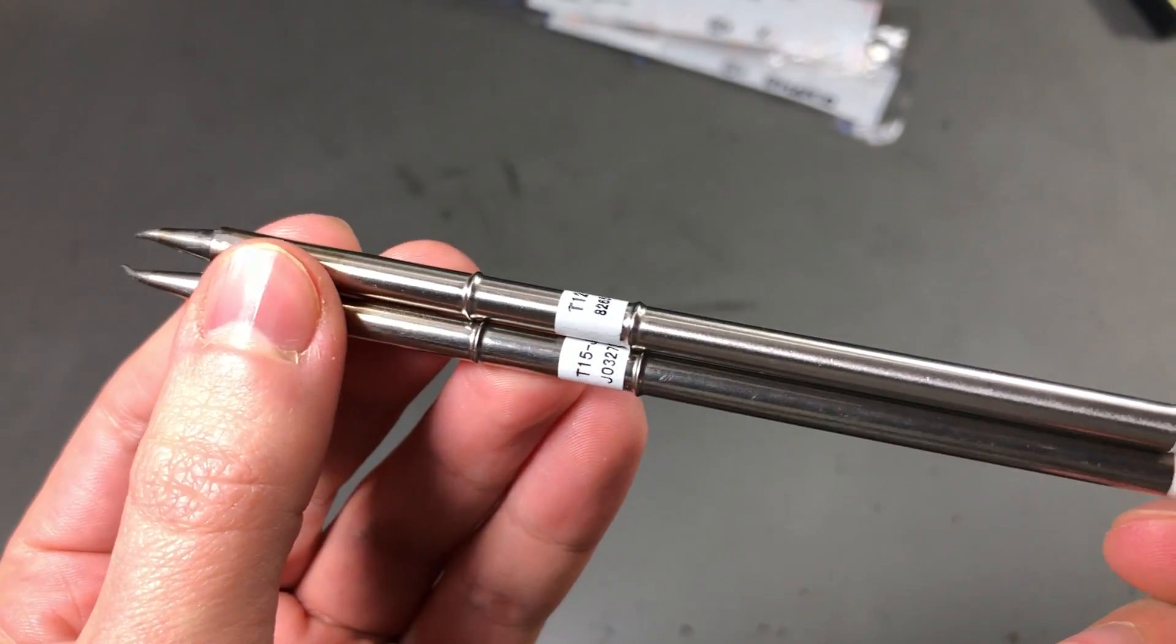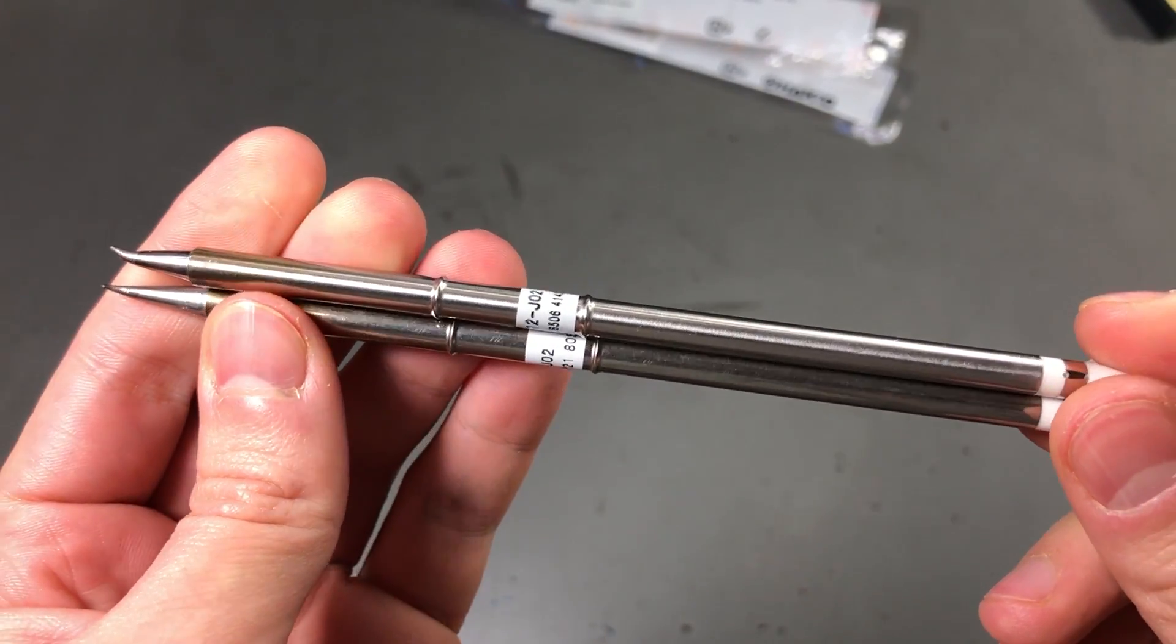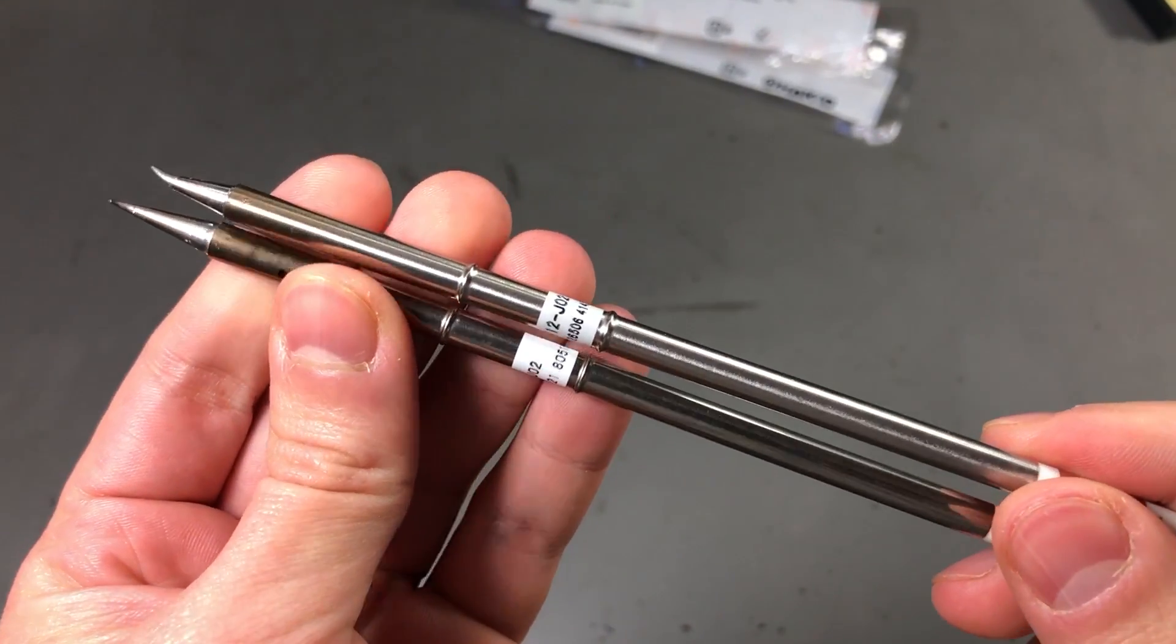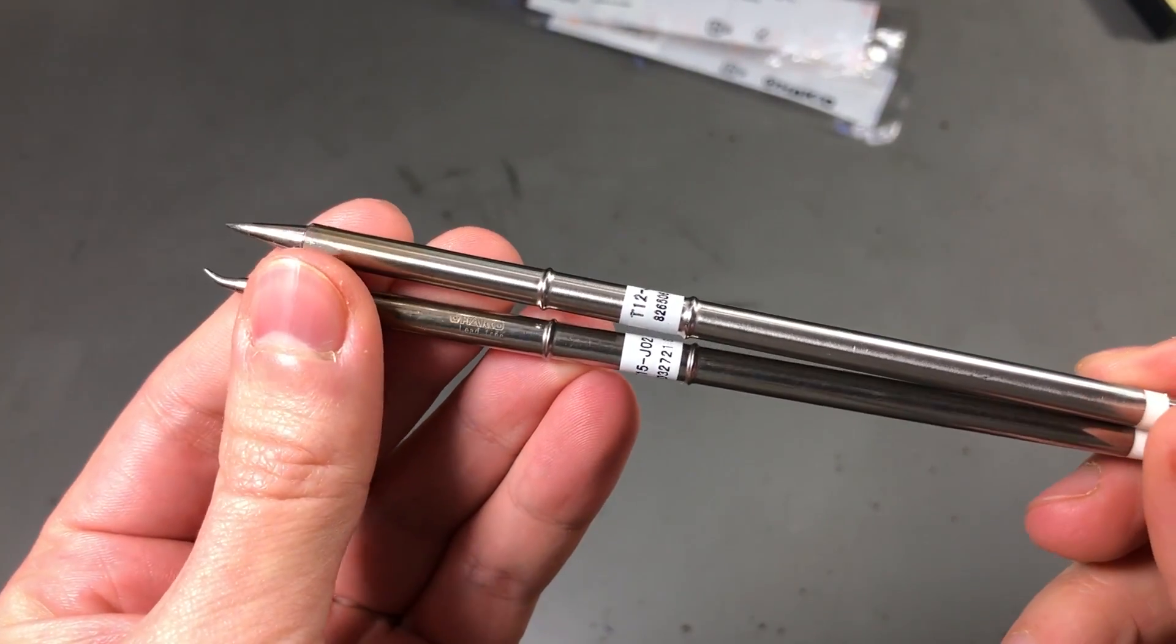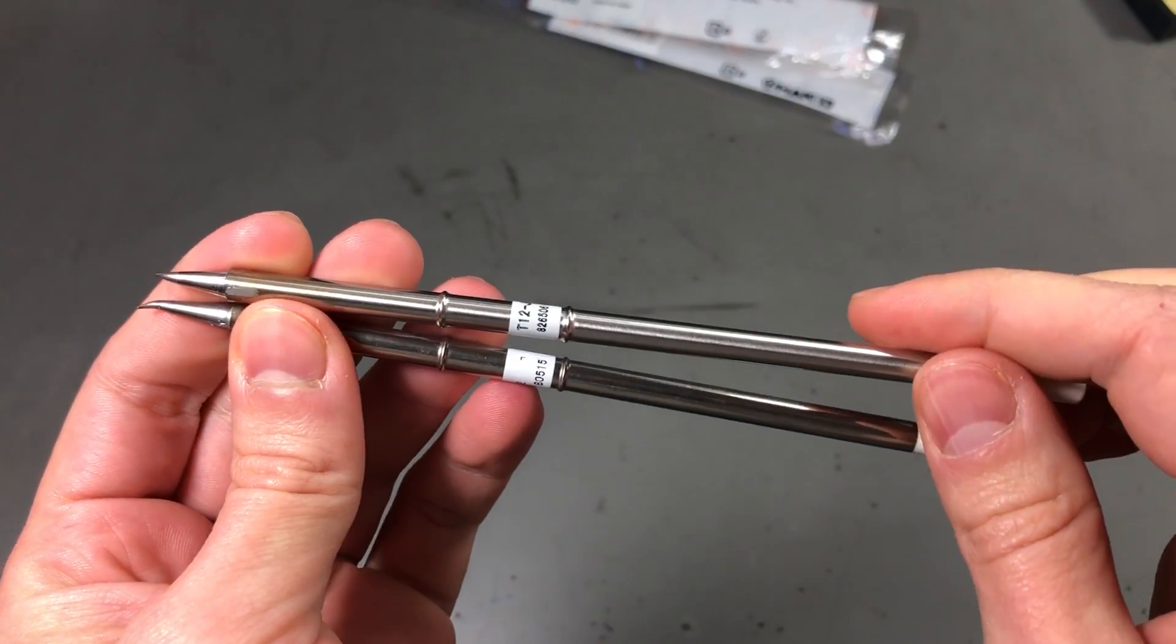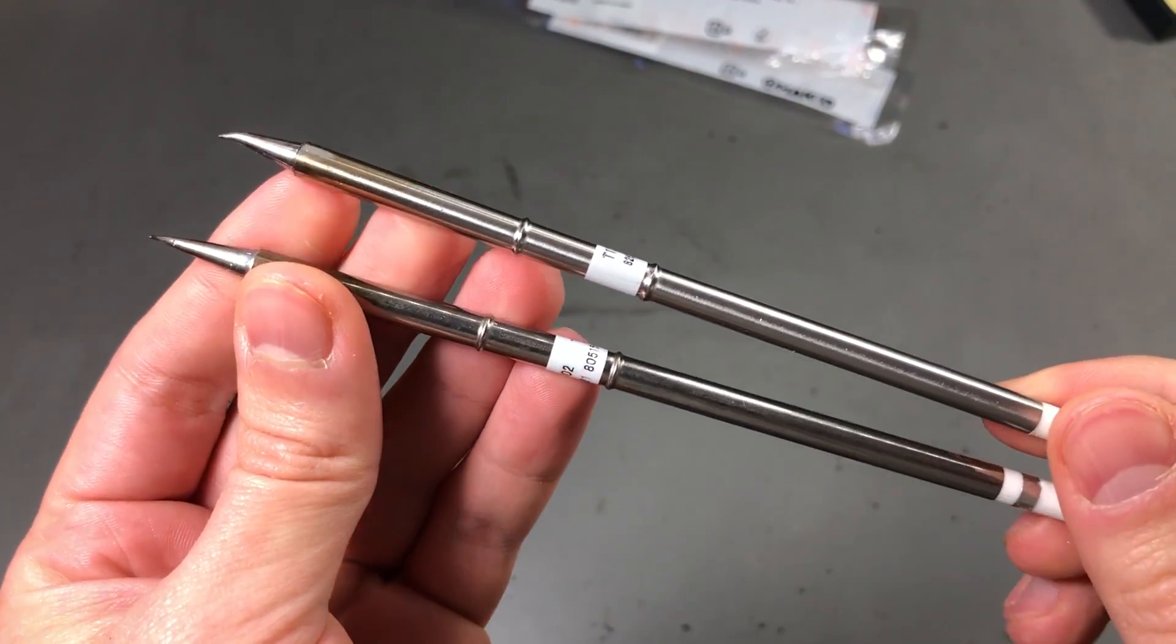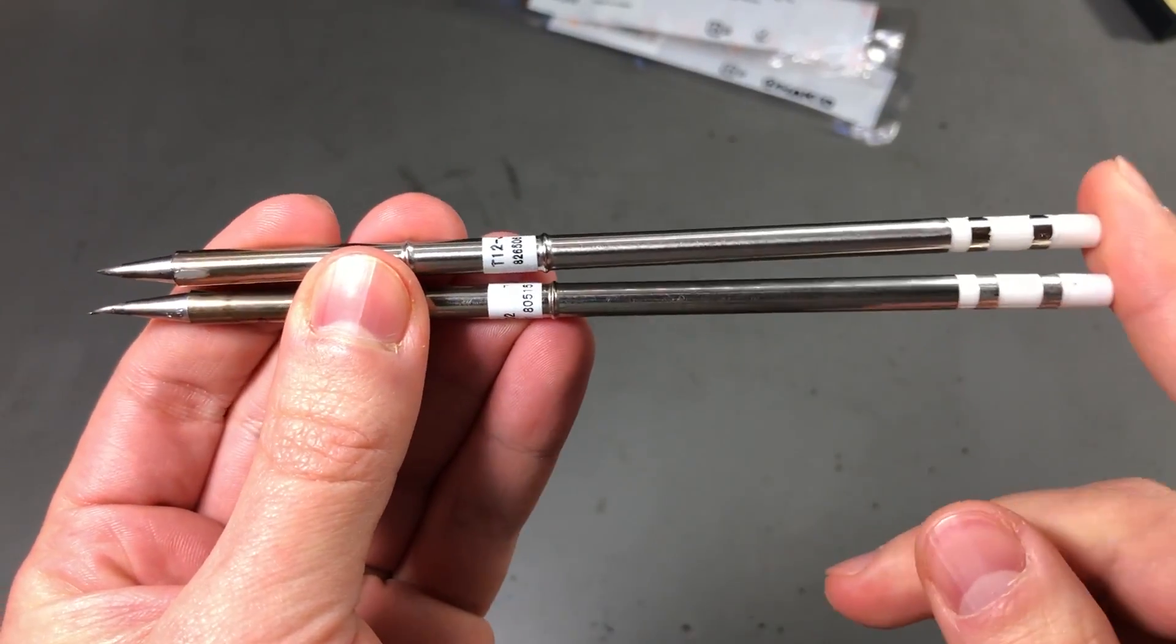The genuine tip has some laser etching here, it says Hakko lead free. Of course these tips are designed for lead free because we're not supposed to use those leaded alloys anymore but they work just fine. And I'm pretty sure you can find these T12 ones from AliExpress with the Hakko laser etching as well but that doesn't mean they are genuine.